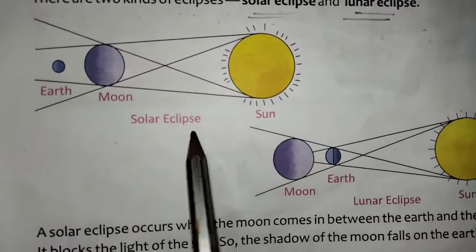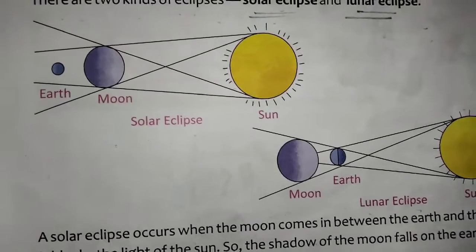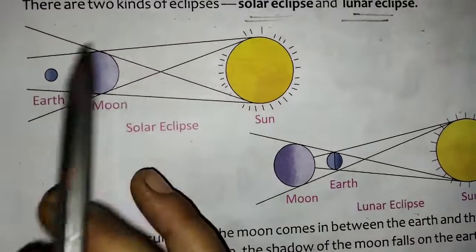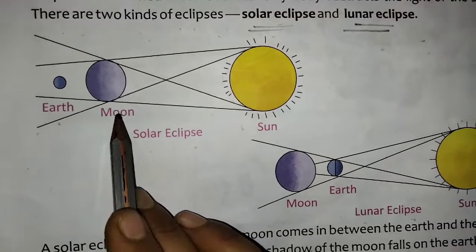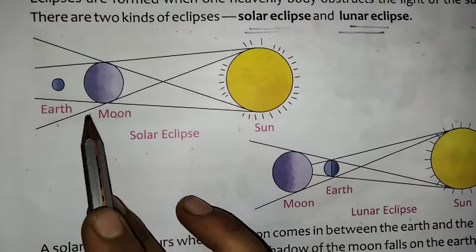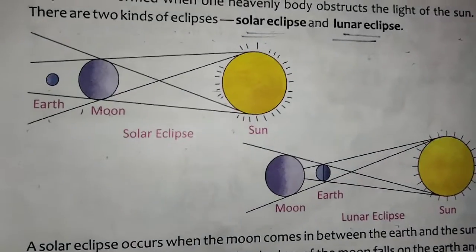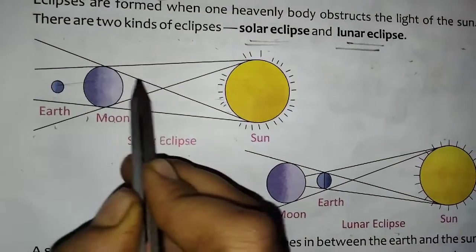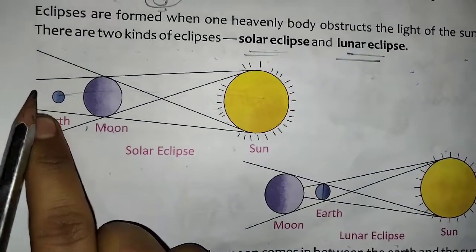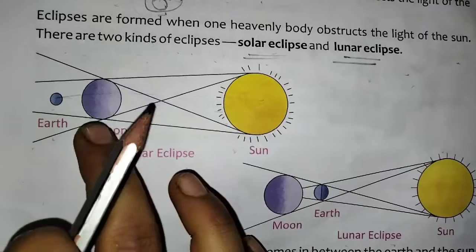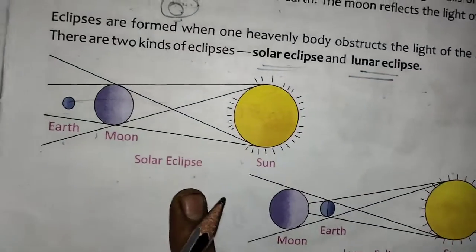This is the solar eclipse and this is the lunar eclipse. When a solar eclipse occurs, the moon comes in between the earth and the sun — one side earth will be there, one side sun will be there, in one direction only. When the moon comes in between them, that is when we get the solar eclipse.